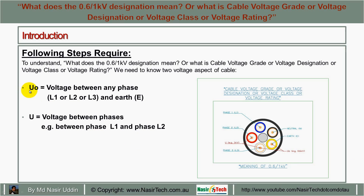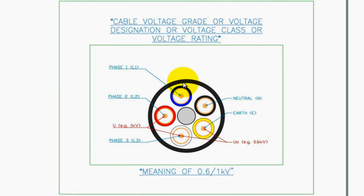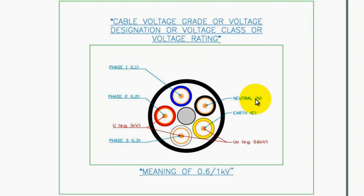One is U0. U0 means the voltage between any phase and earth. In this picture I am showing a 4-core plus earth cable. We have phase 1 or line 1, phase 2 or line 2, phase 3 or line 3, a neutral core, and an earth core. U0 means the voltage difference between any phase and the earth core.